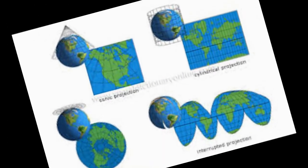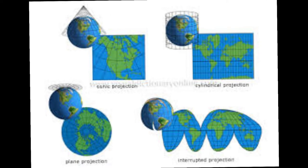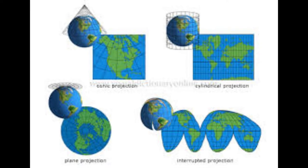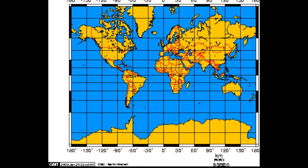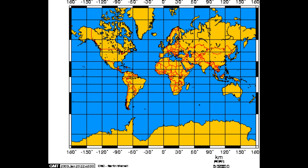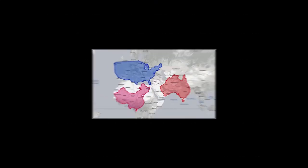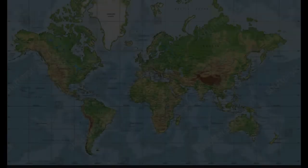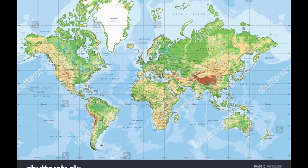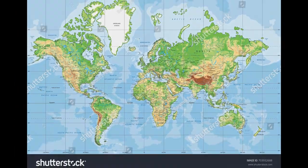The first one is Mercator, the most popular map projection in the world, which has been around for 448 years now. It was created by Flemish cartographer Gerardus Mercator in 1569, a time when Antarctica hadn't even been discovered yet.